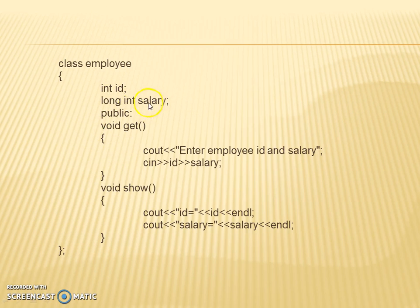It comprises of its ID and salary with access specifier as public. In void get() method we are asking the user to enter employee ID and salary. The void show() function is used for displaying the salary and ID of the employee.